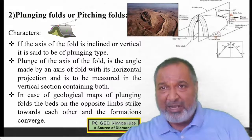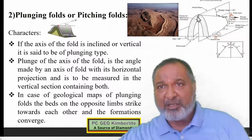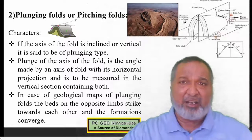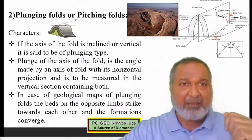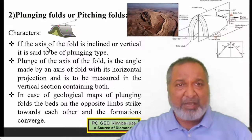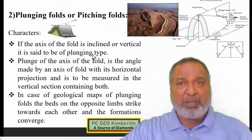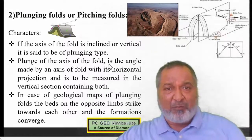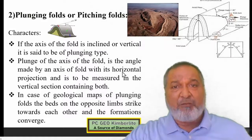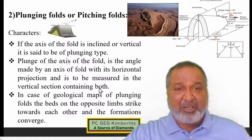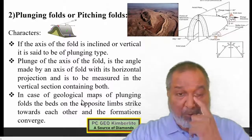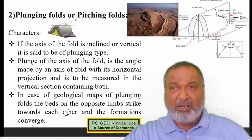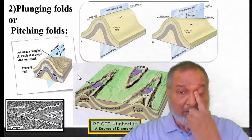In this particular diagram, this is the anticline. This is the fold axis and this is the axial plane. The axial plane is horizontal, and with this the angle we make here will be called as the plunging angle. The plunge of the axis of the fold is the angle made by the axis of the fold with its horizontal projection, and it is measured in the vertical section containing the fold. In the geological map of a plunging fold, the beds on opposite limbs strike towards each other and the formations converge.